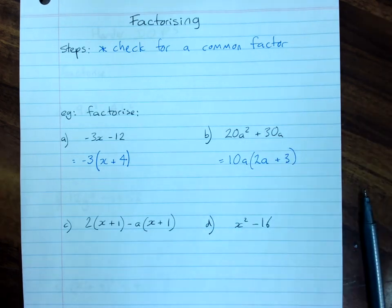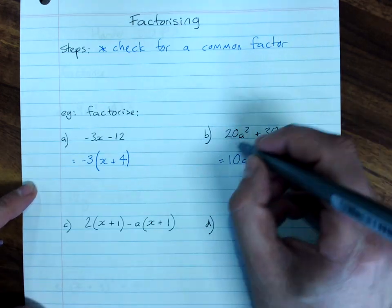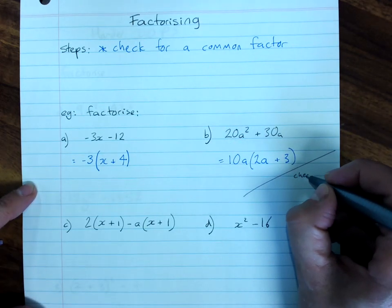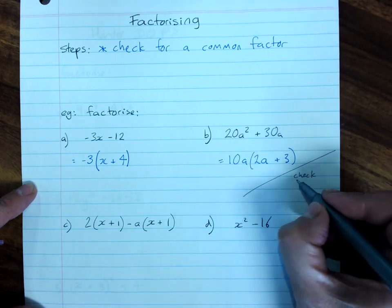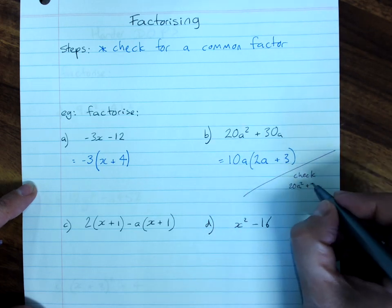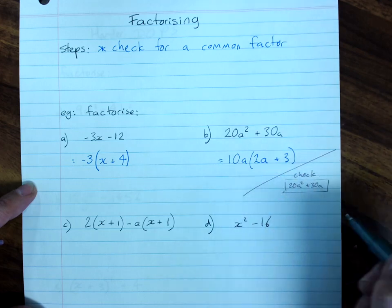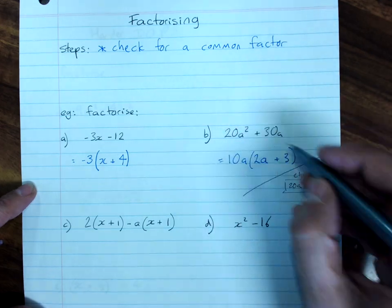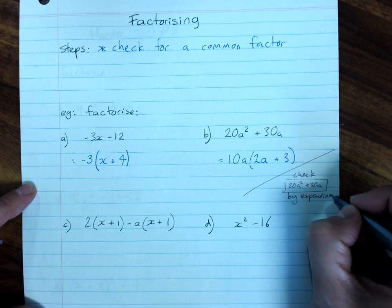Remember, as a separate part of your working, so not part of the answer, you can do a quiet little check by expanding that back out. 10a times 2a is 20a squared. 10a times 3 is plus 30a. As long as you get back, when you expand to the original question, then you did the right thing.